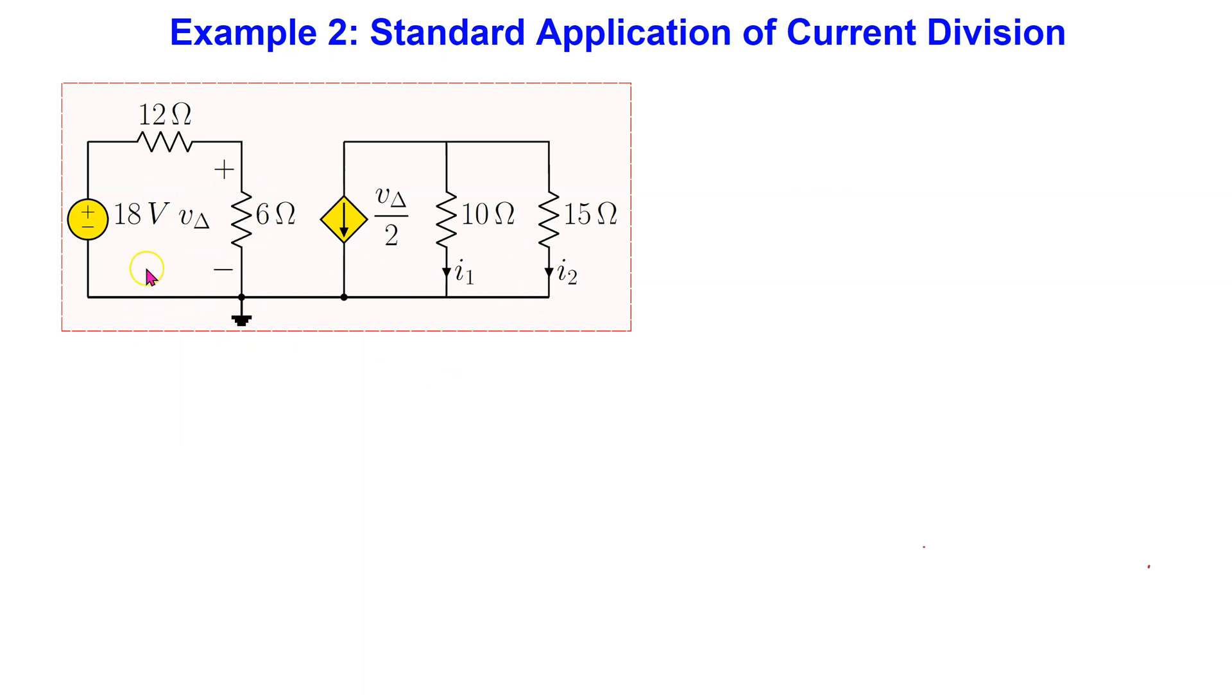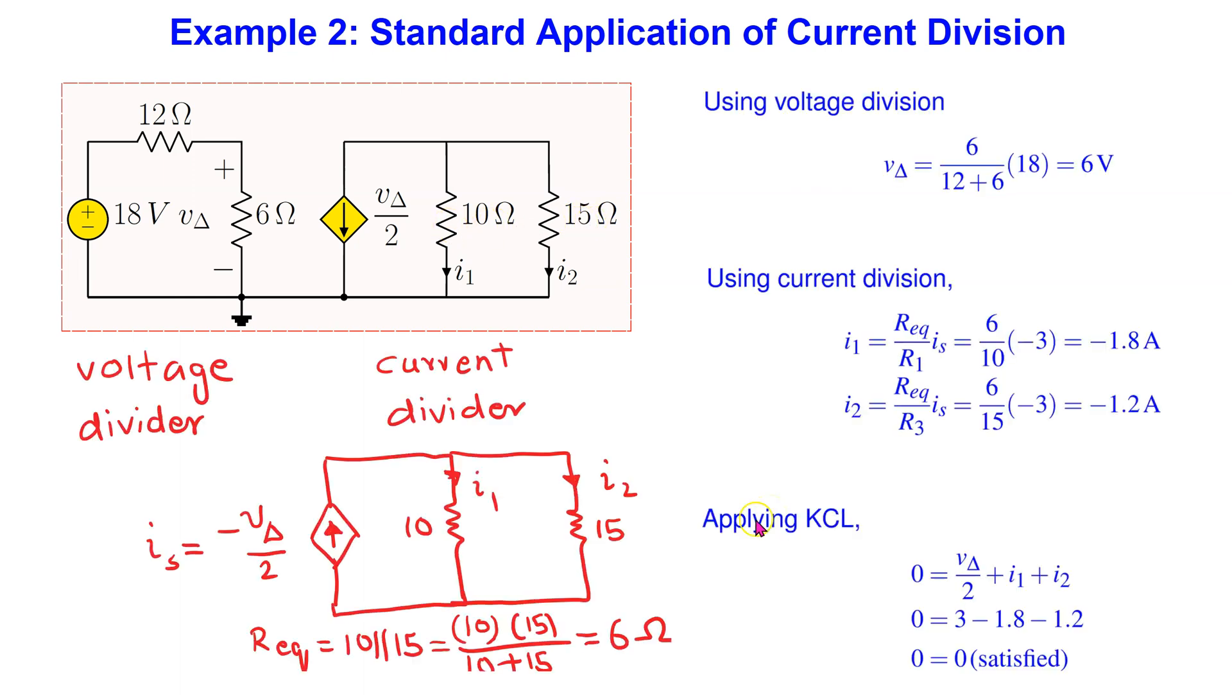we can recognize a voltage divider formed by the 6 and the 12 ohm resistors connected in series. We can also recognize a current divider formed by the dependent current source and the 10 and 15 ohm resistors in parallel.